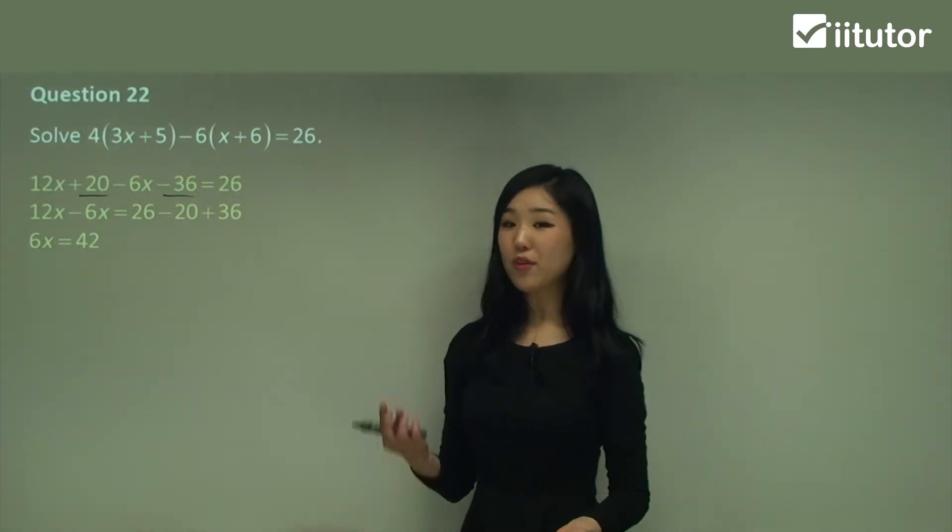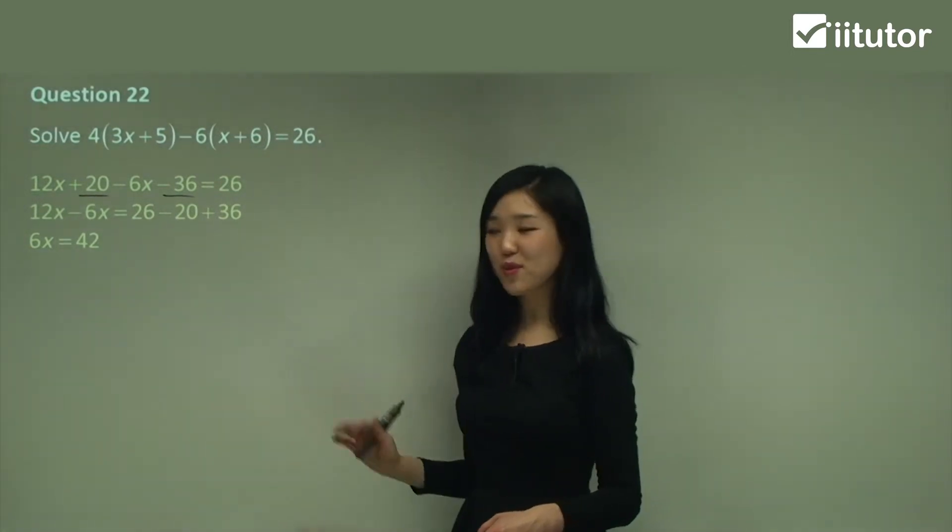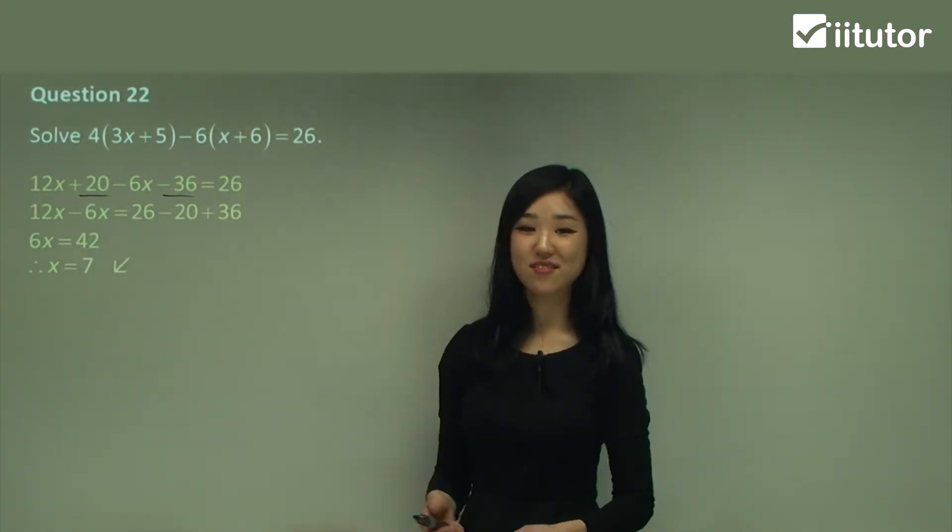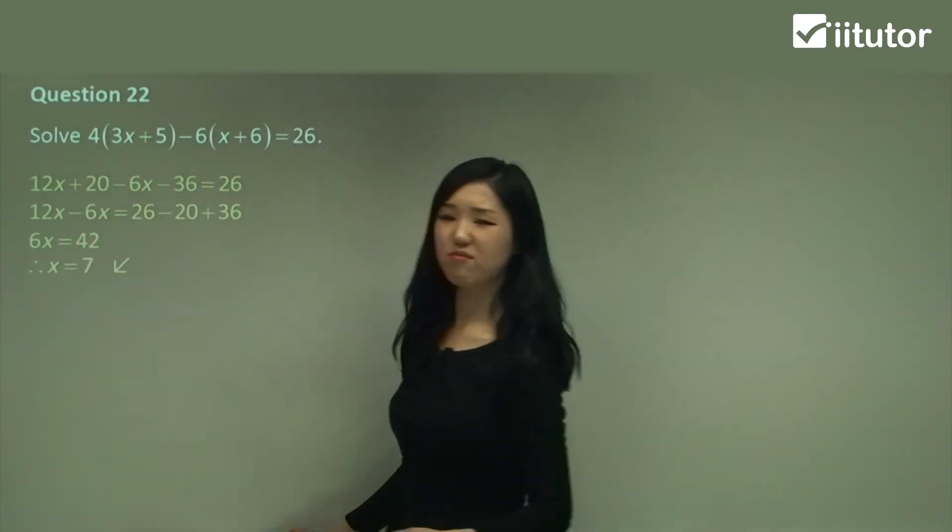So 6x is 42. What's x? We need to divide by 6 don't we? So what's 42 divided by 6? 7. So 7 is the answer. That's x. So really easy yeah.